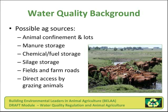Possible areas where actual sources of water quality impacts from agriculture occur include animal confinement areas and lots, manure storage areas, chemical or fuel storage areas, silage pits, trenches, or silos, fields and farm roads, and where animals have direct access to surface water.